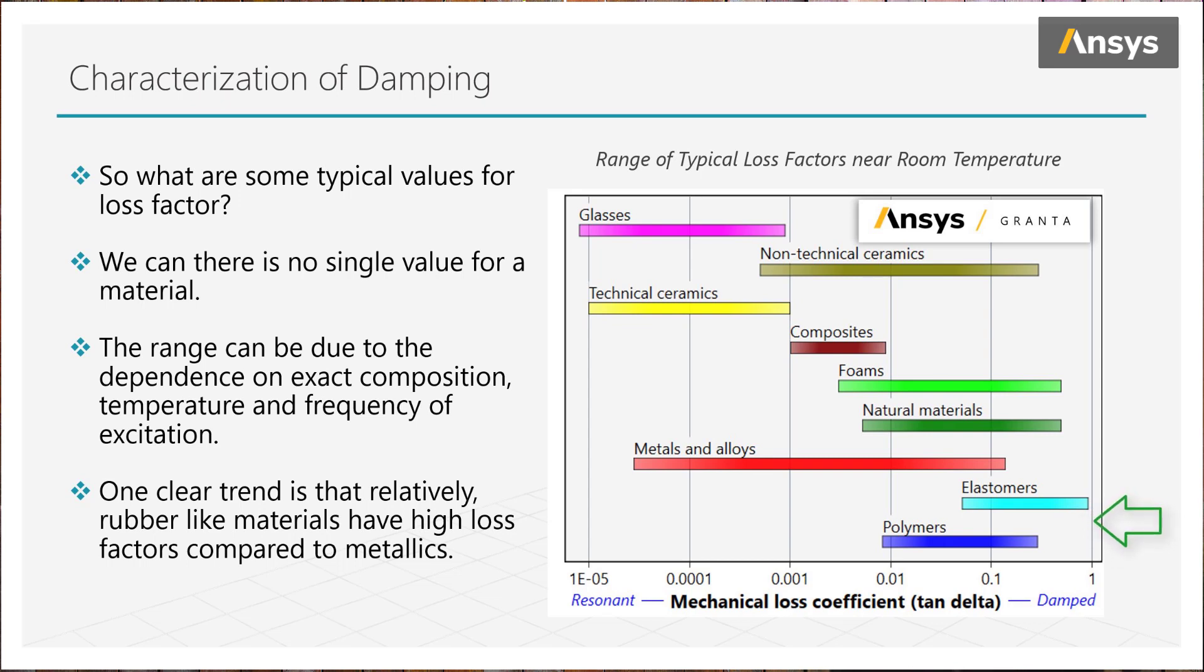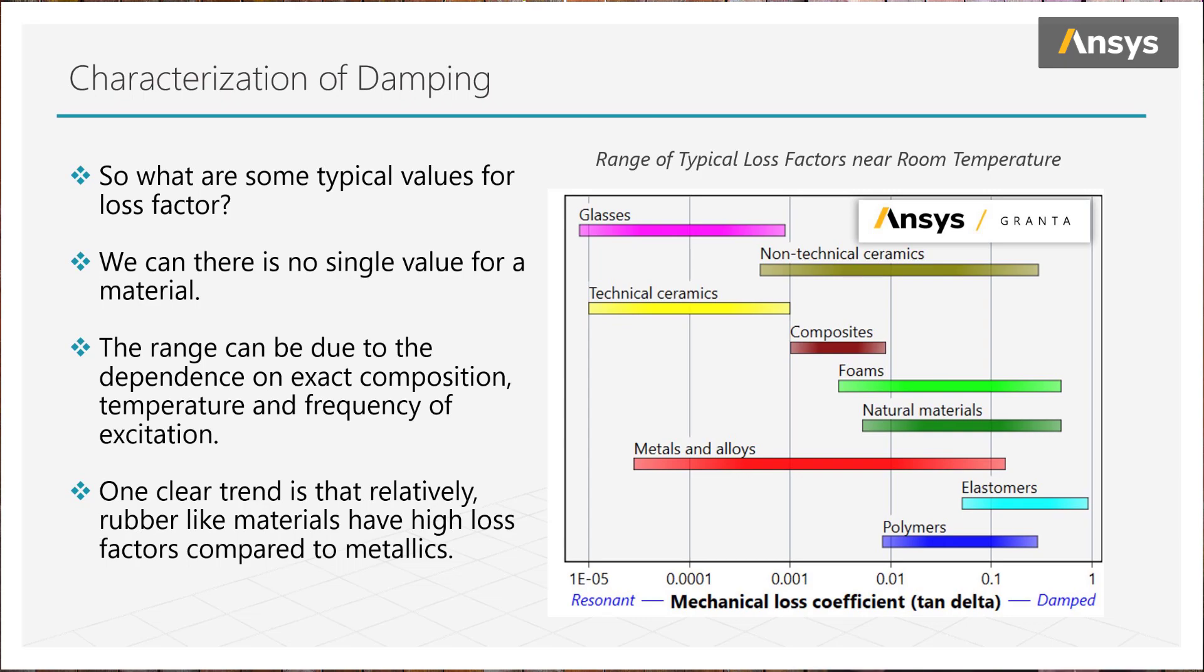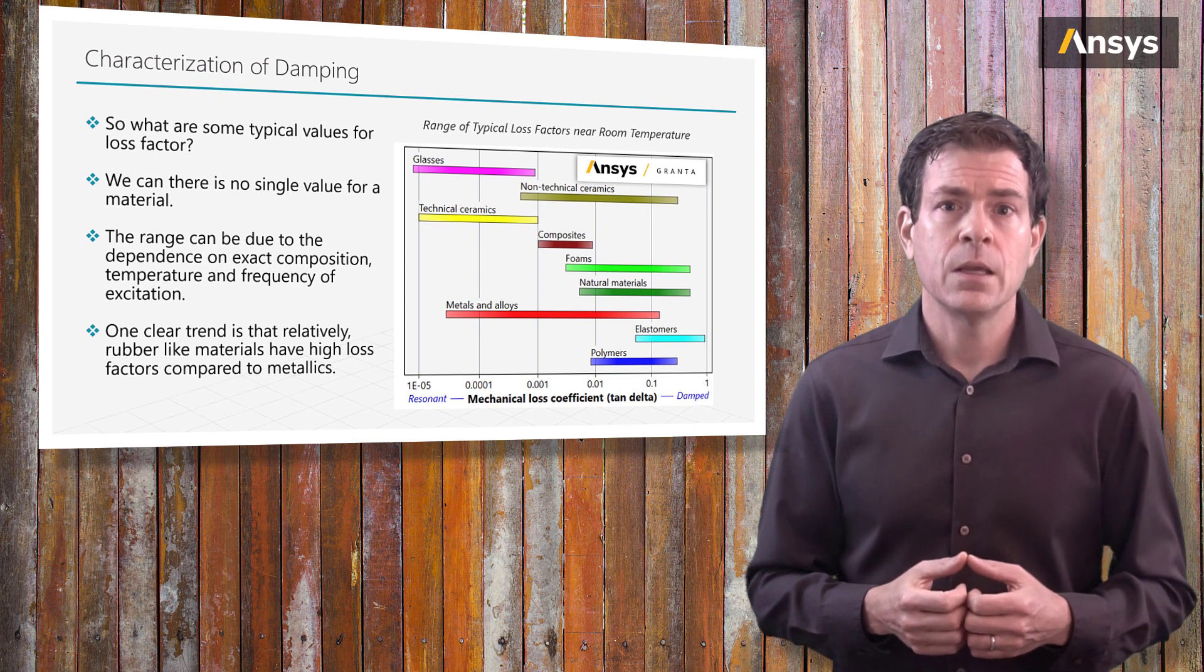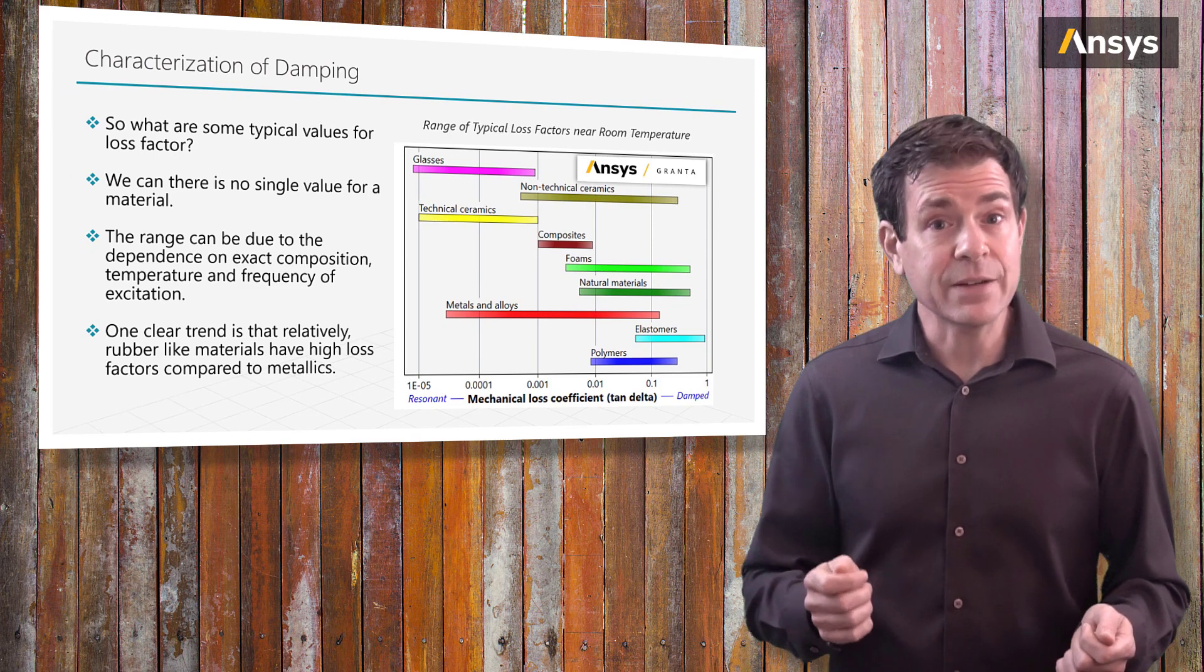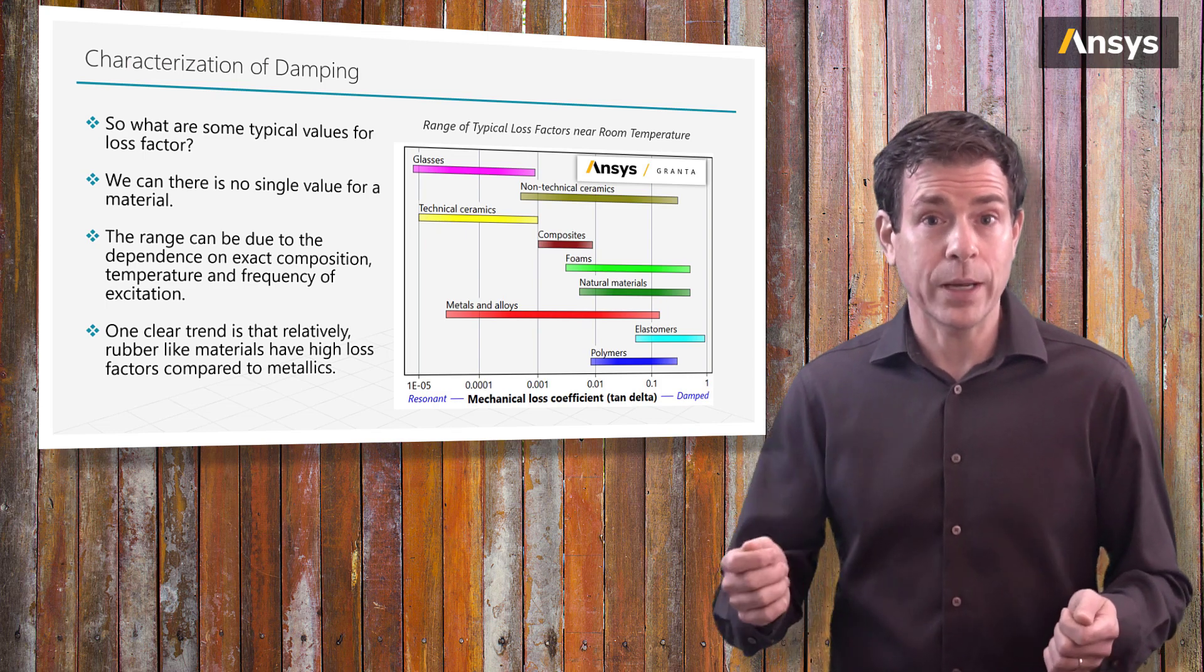Keeping in mind that not only will the loss factor change with composition of the actual material, but it will be dependent on the frequency of the vibration and also the temperature, especially for non-metallic materials. A rubber isolator operating in the frigid Arctic will dampen vibration differently than if operating at the steamy equator.